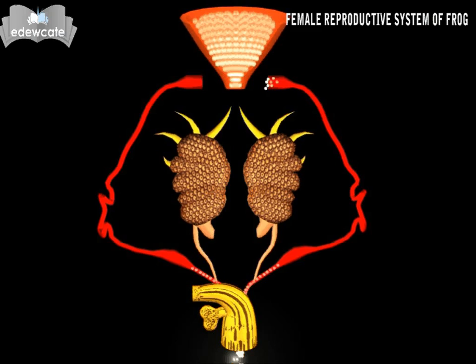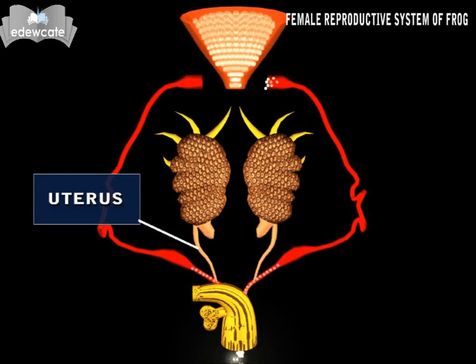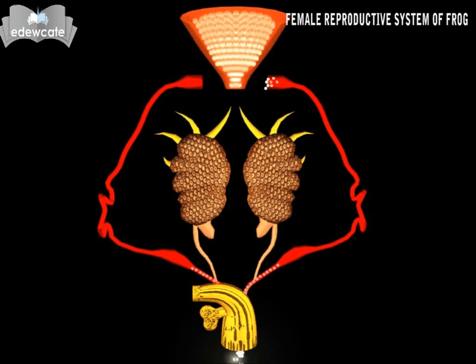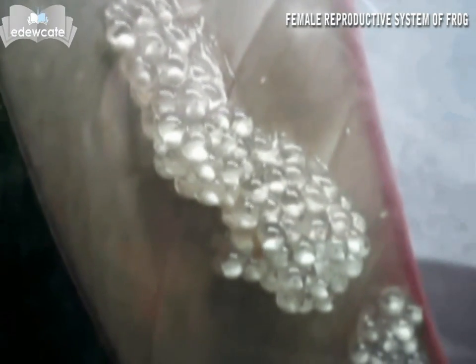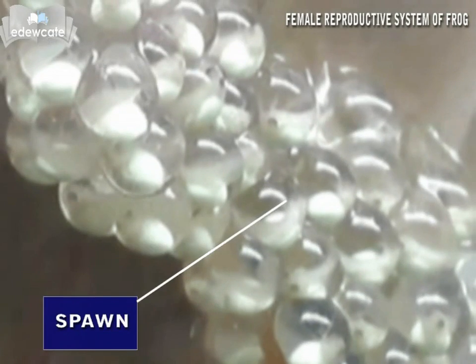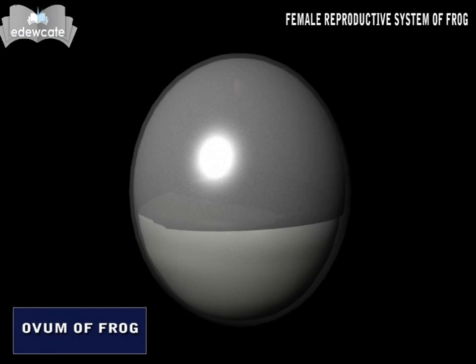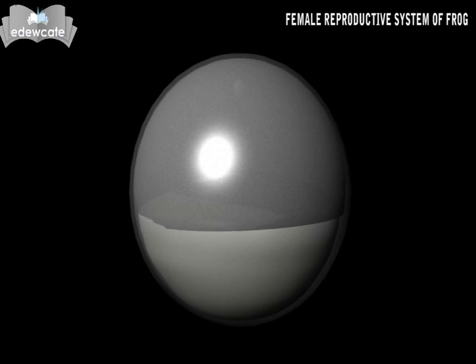In the female frog, the urinary or excretory ducts that arise from the kidneys act only as excretory ducts or urinary ducts. A large number of eggs are released as a mass. This mass of eggs is called spawn.